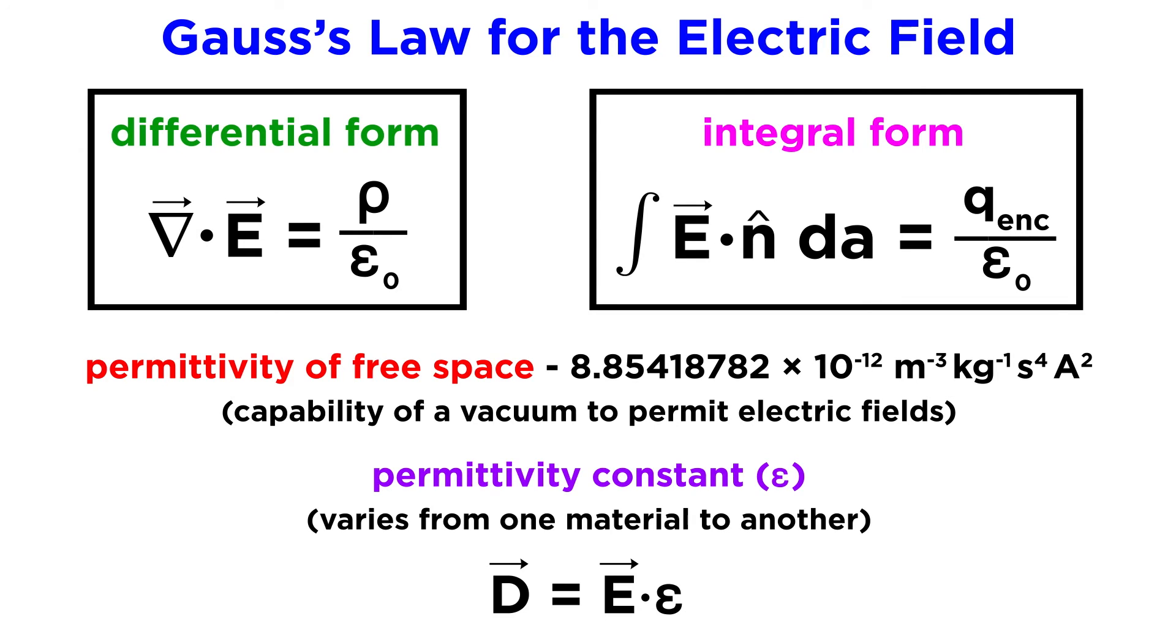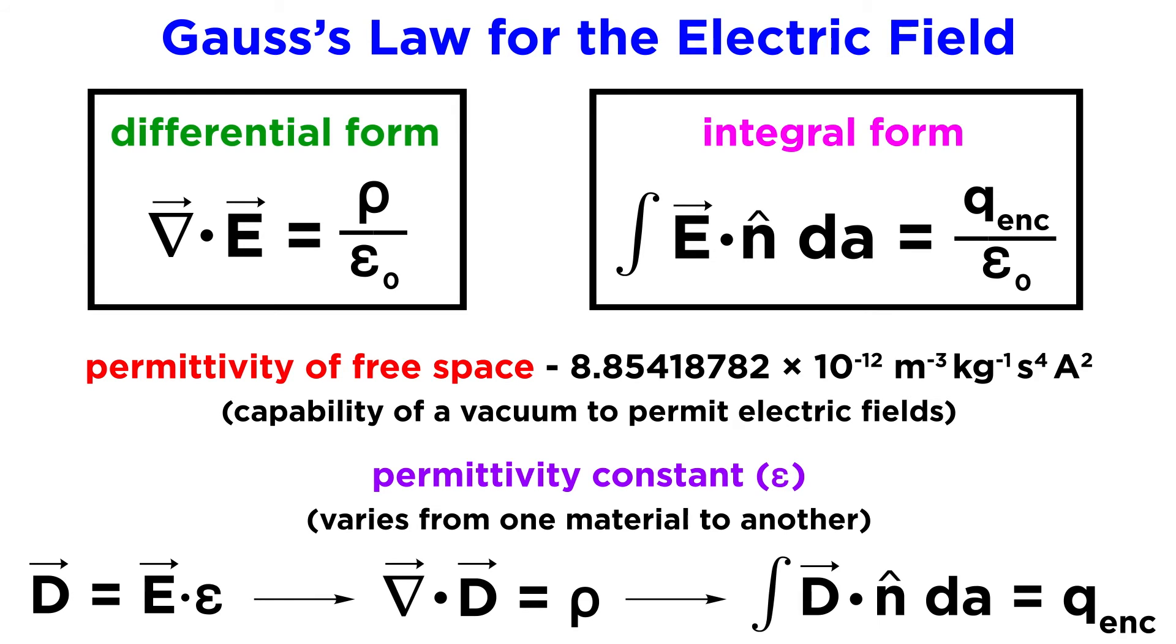And we can define the vector field D in this manner, as the electric field times permittivity. In such a scenario, Gauss's law can be expressed in this manner, where the permittivity constant is not shown because it is accounted for in D. The same goes for the corresponding integral form.